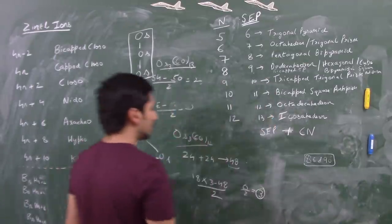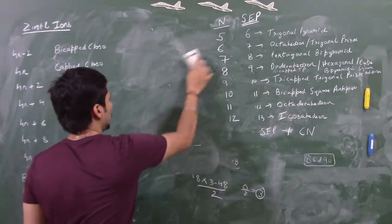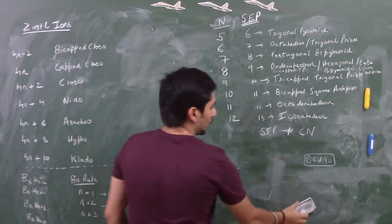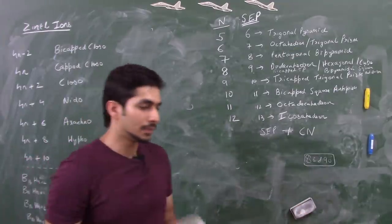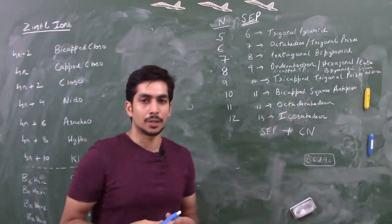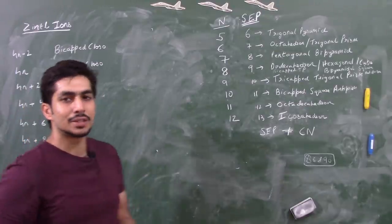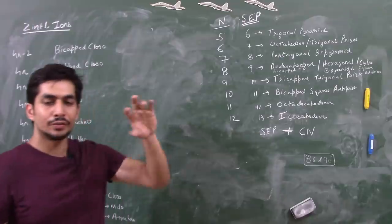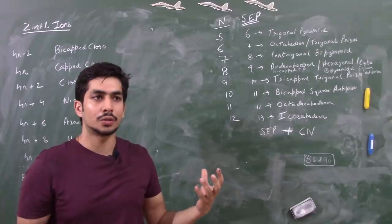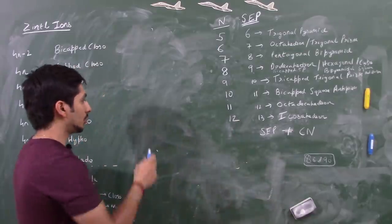Now, how do we unify all these theories? To unify all these theories you have to know isolobal analogy - that's it. So let's see how you use isolobal analogy. If you have a boron-hydrogen cluster or, for example, osmium(CO)3 as a transition metal cluster, and you want to compare this transition metal cluster to the main group cluster, this is what you do.